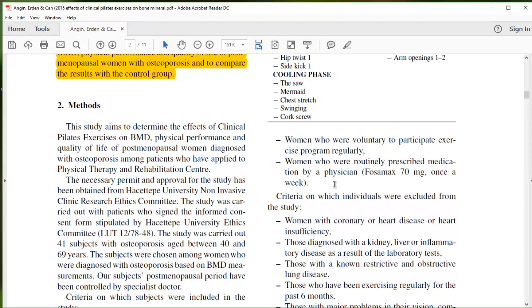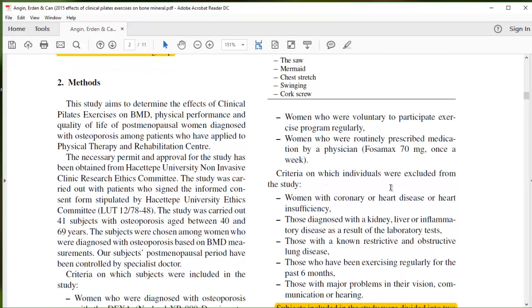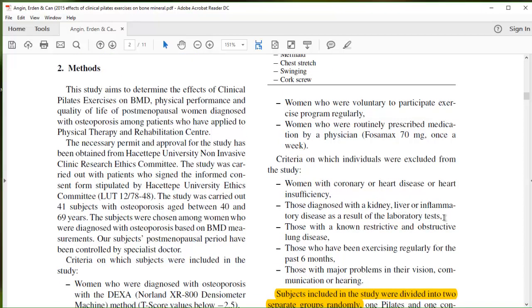And scrolling back upward, they were voluntarily able to participate in exercise and they had some type of osteoporosis medication. So that's going to introduce some bias. They're already taking medication, now they're going to be doing Pilates exercises. They were excluded from the study if they had heart disease, kidney or liver inflammation, obstructive lung disease, those who'd been exercising regularly. So this also is important because they're taking women who were sedentary, who didn't exercise.